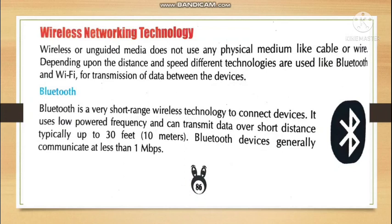The first wireless technology is infrared, which is the shortest-range wireless technology used earlier. Devices had to be kept directly in front of each other at very short distances. After that came Bluetooth, which you connect to your devices to transmit data. Bluetooth uses low-powered frequency and can transmit data over a short distance of about 10 meters or 30 feet, at a speed of 1 Mbps.